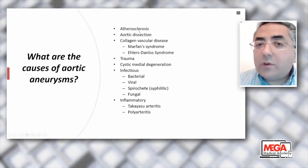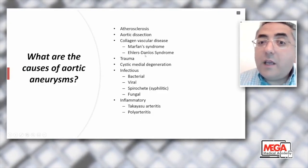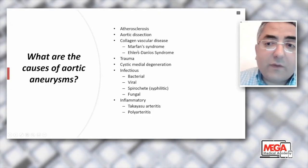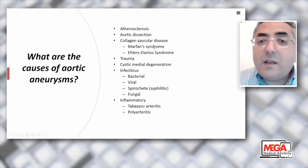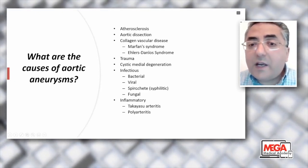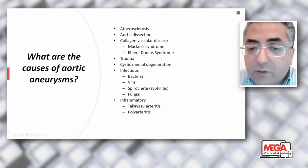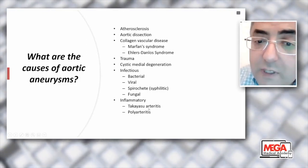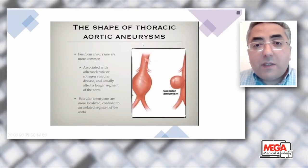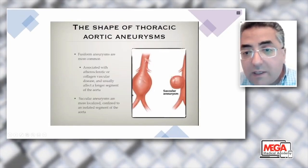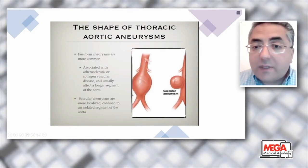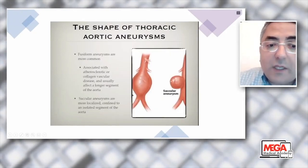Causes of aortic aneurysm include atherosclerosis, aortic dissection, collagen vascular disease — Marfan syndrome and Ehlers-Danlos syndrome (Marfan's is well-established in guidelines; Ehlers-Danlos less so) — trauma, cystic medial degeneration, infectious causes (bacterial, viral, syphilitic, fungal), and inflammatory causes such as Takayasu arteritis and polyarteritis. Aneurysm shapes are either saccular — a localized segment, confined to an isolated portion of the aorta — or fusiform, which is most common, associated with atherosclerosis or collagen disease, and involves a longer segment.